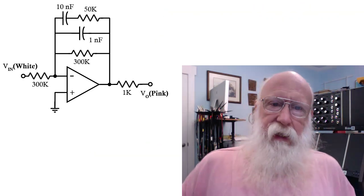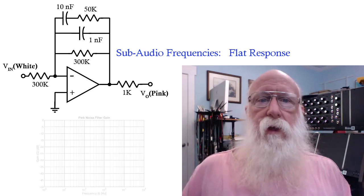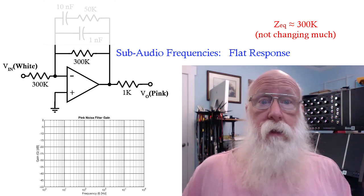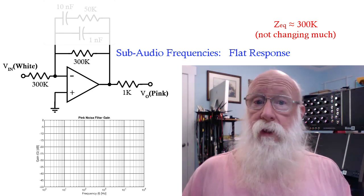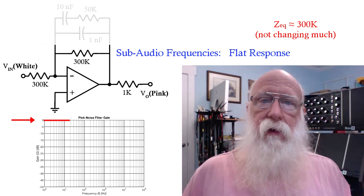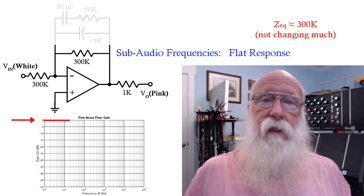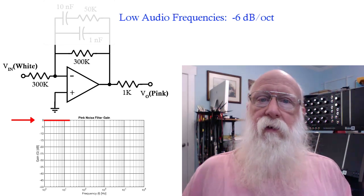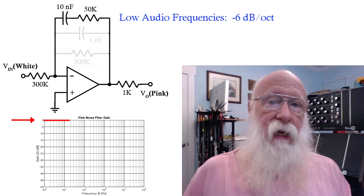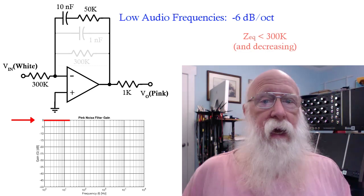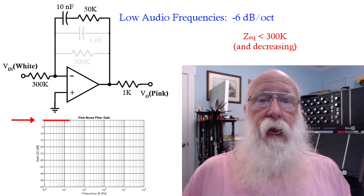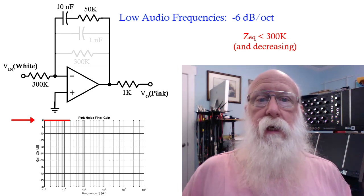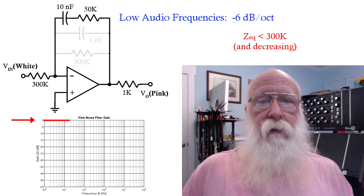To summarize this, at very low frequencies, the 300K has the smallest impedance of the three branches, and it's not changing with frequency. And so the frequency response is flat at really low frequencies, sub-audio frequencies. For low frequencies in the very low audio range, then the branch with the 10 nanofarad and 50K takes over. It now has the smallest impedance, and it's decreasing as frequency increases, and so the response starts dropping at roughly 6 dB per octave.